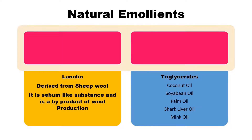We get natural emollients from two basic sources. First, in the form of triglycerides from both plants and animals. Triglycerides are basically the fatty components of plants and animals. Examples of plant fatty acids include coconut oil, soybean oil, and palm oil. Since they are produced from plant sources, they are highly greasy, non-polar, and work as emollients in various herbal preparations.